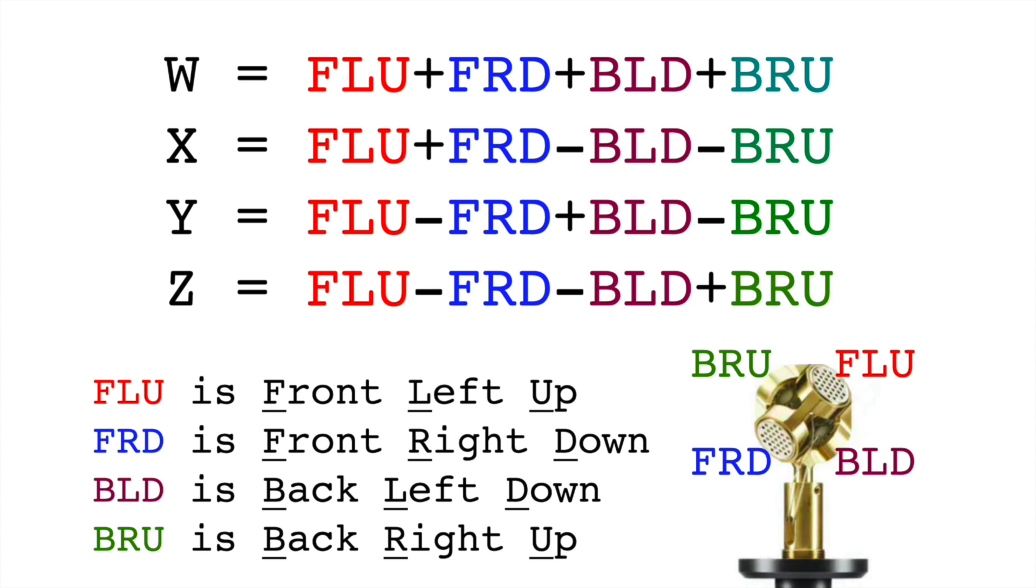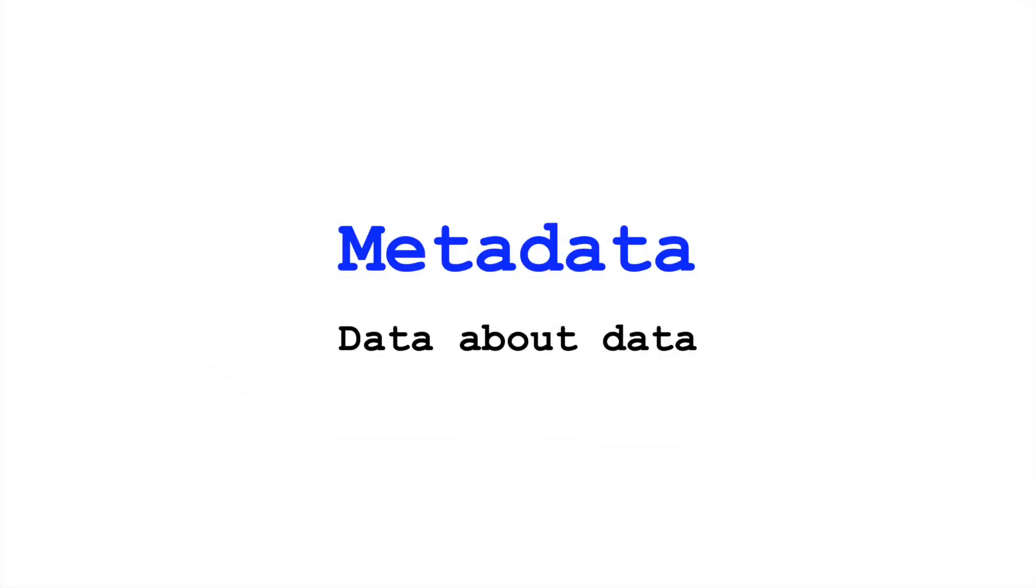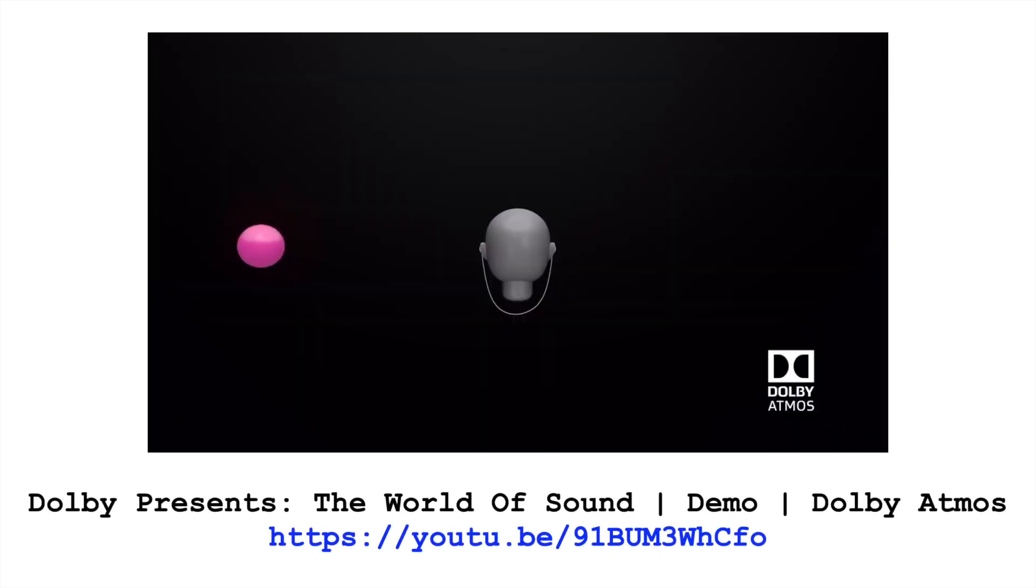But another perhaps more mainstream way to represent 3D audio is with object-based audio. This is the approach of Dolby Atmos, DTS-X, and at this time Sony's Tempest 3D audio. With object-based audio, we take our audio information, for example one channel of audio, and we pair it with metadata. Metadata is data about data. In this case, it's data about the audio track. And importantly, that metadata contains information about the position of that audio.